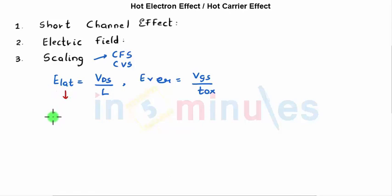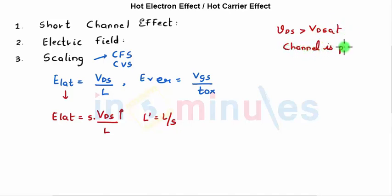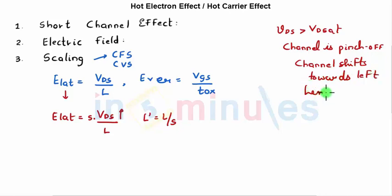With constant voltage scaling, E_lateral = VDS / L_dash, where L_dash = L / S. Since VDS is not scaled down, E_lateral increases. We also know that when VDS exceeds VDSat, the channel is pinched off, and further increasing VDS shifts the channel towards the left, effectively reducing the channel length. This further increases E_lateral.